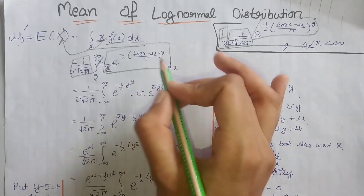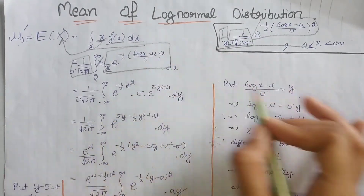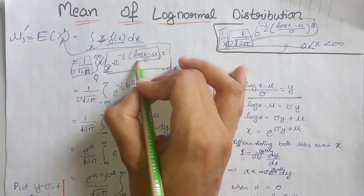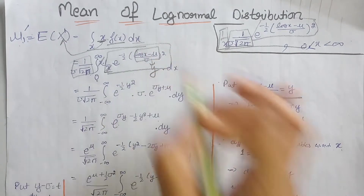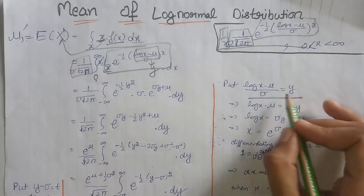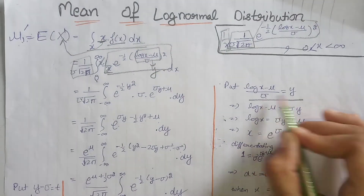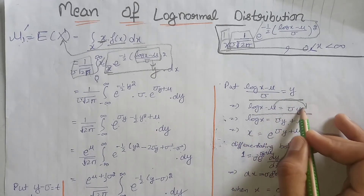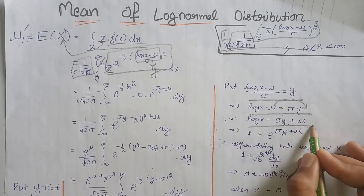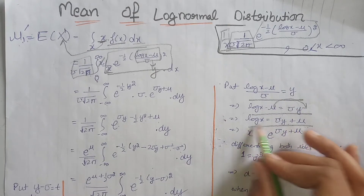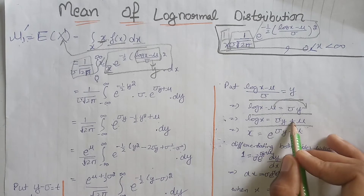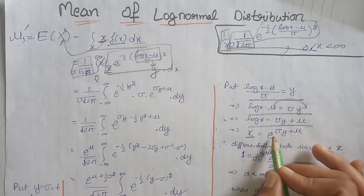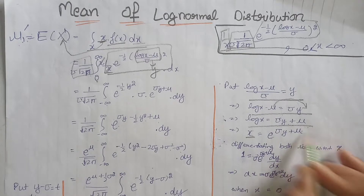To make this integration easier, we use the substitution y = (ln x - μ) / σ. After multiplying both sides by σ and moving μ to the other side, we get ln x = σy + μ. Taking the exponential of both sides gives x = e^(σy + μ).